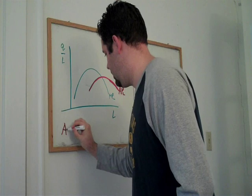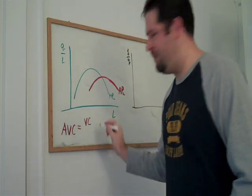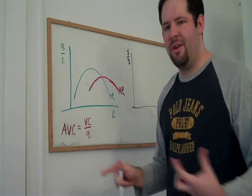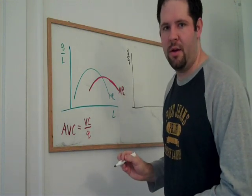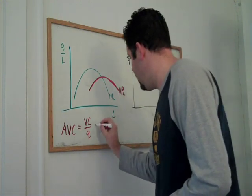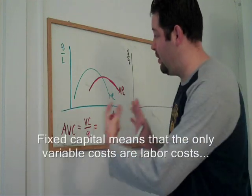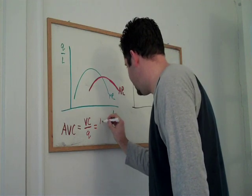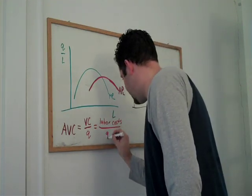Average variable cost is variable costs divided by quantity. We can manipulate this to get a relationship with average product. In the short run, capital is fixed, so variable costs are really labor costs, and quantity is just quantity.